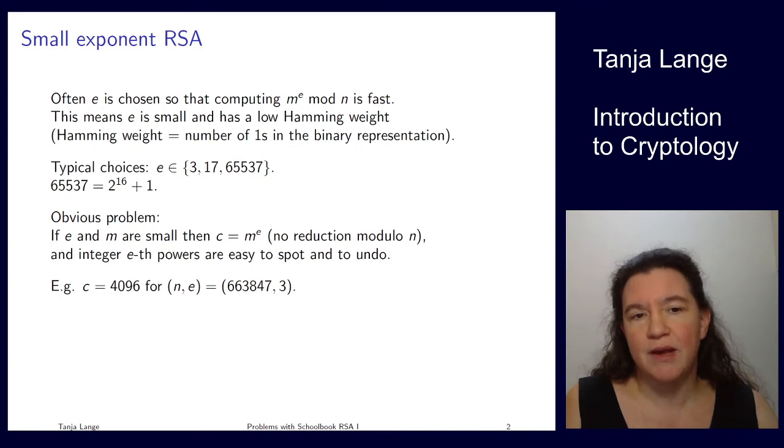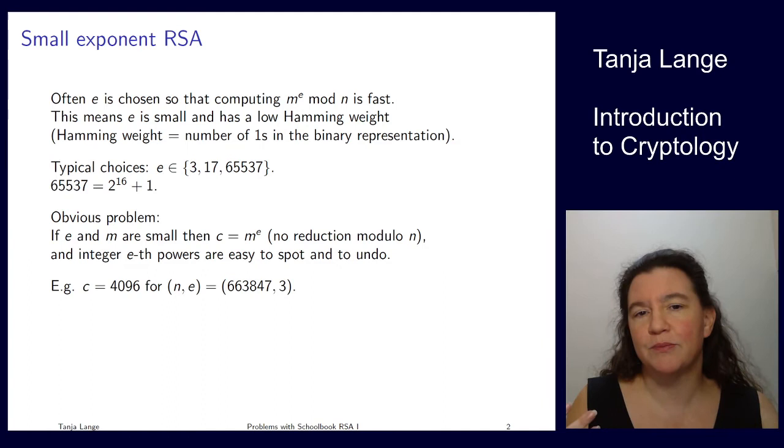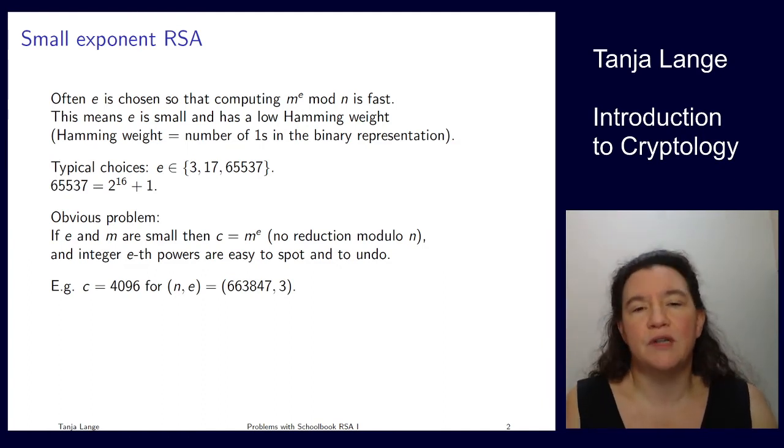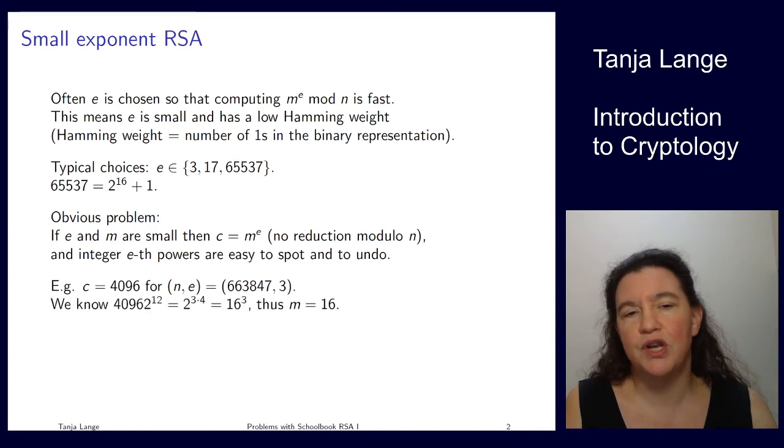If you have both the message and the exponent being small, then you have kind of the obvious problem that if you take the message to the e, there is no reduction. So you haven't even reached n yet. So for instance, if you've seen 4096 and you know that the exponent was 3, then it is fairly likely that there was no reduction. Well 4096, we know this number.